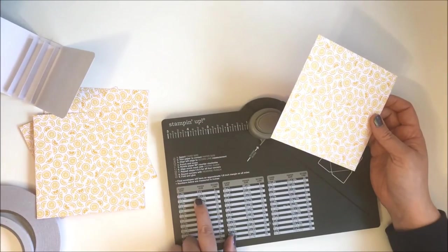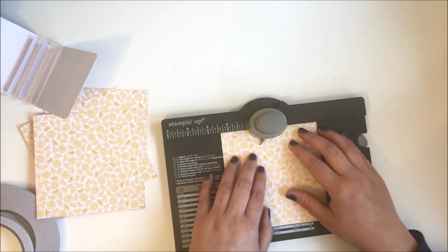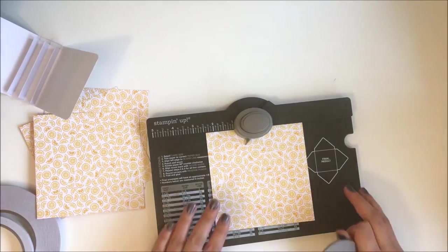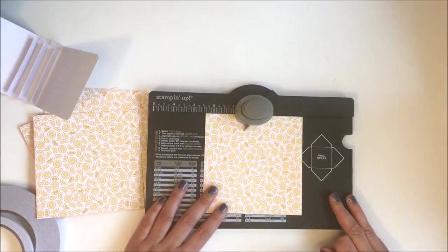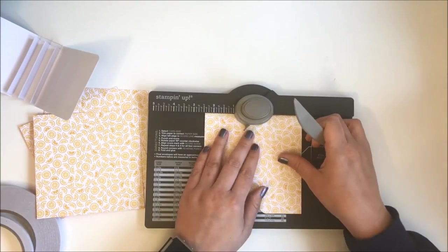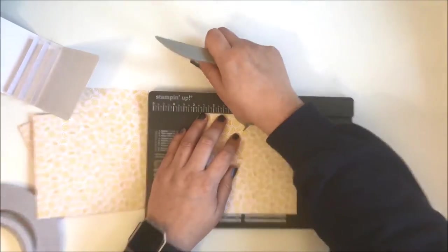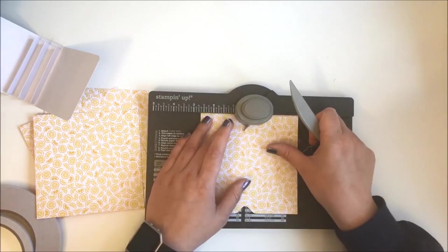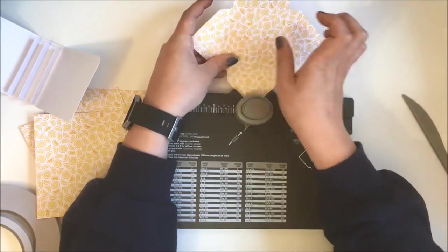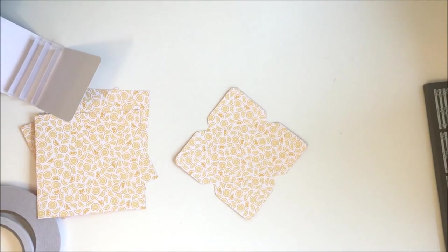I needed four pieces of paper that were 5 by 5. Using my envelope punch board, I punched and scored at the 2 3/8 mark. For those that haven't used an envelope punch board before, they are amazing. You punch it at 2 3/8 and then you turn it around 180 degrees. You're just following the instructions on the board because we've made an envelope that is longer than it is wide.